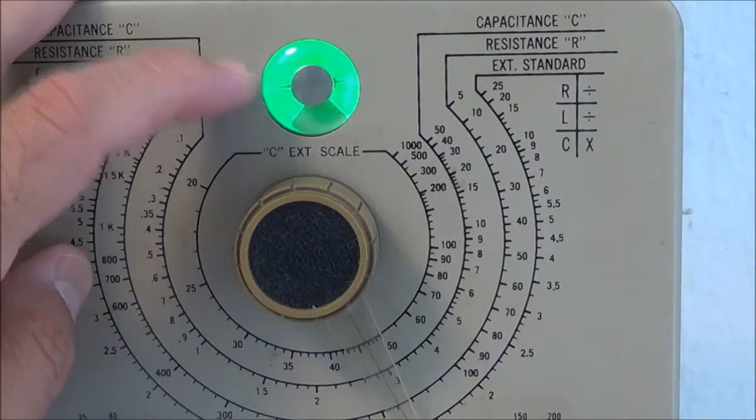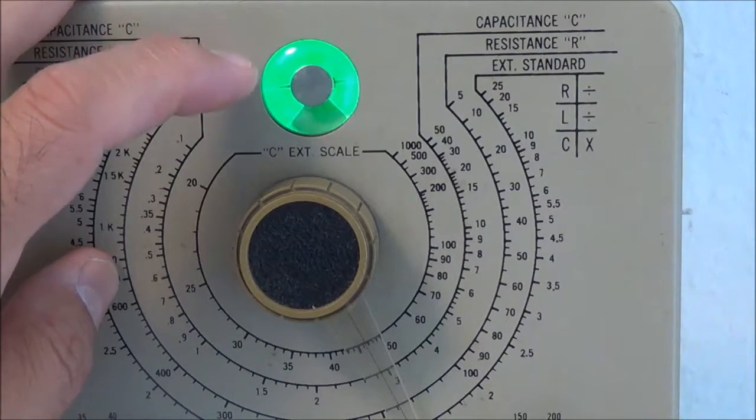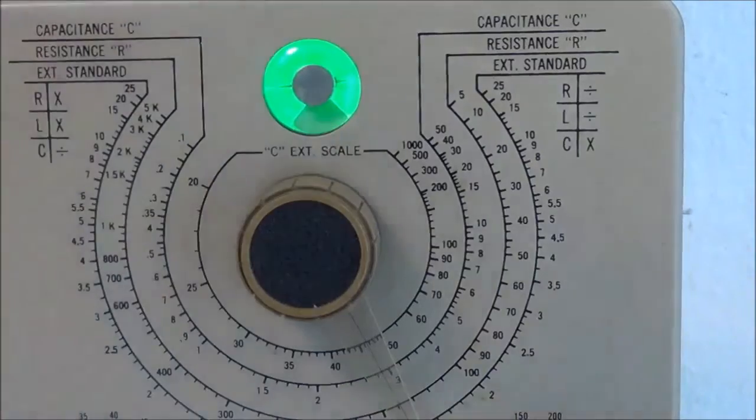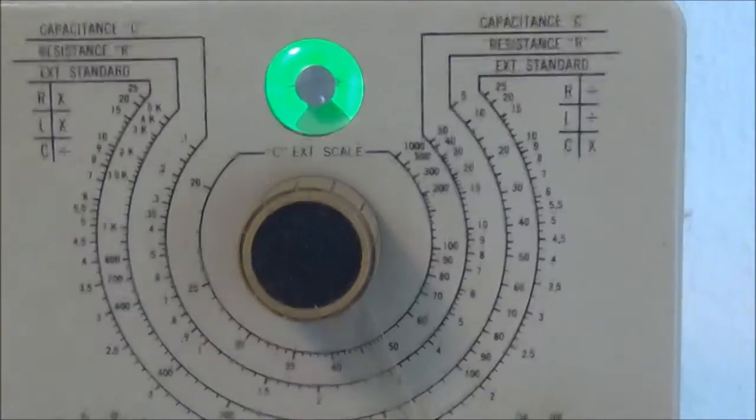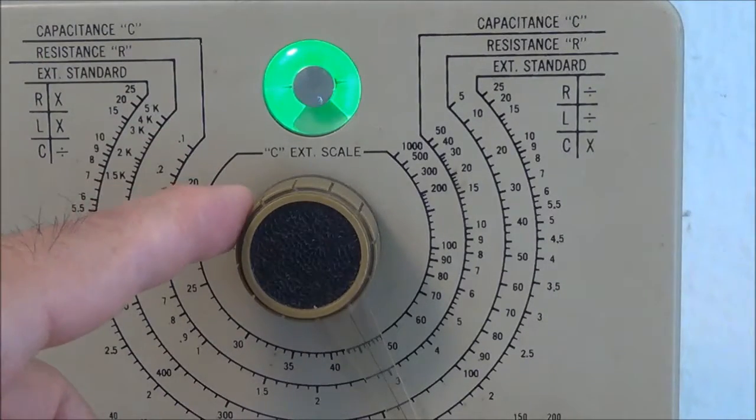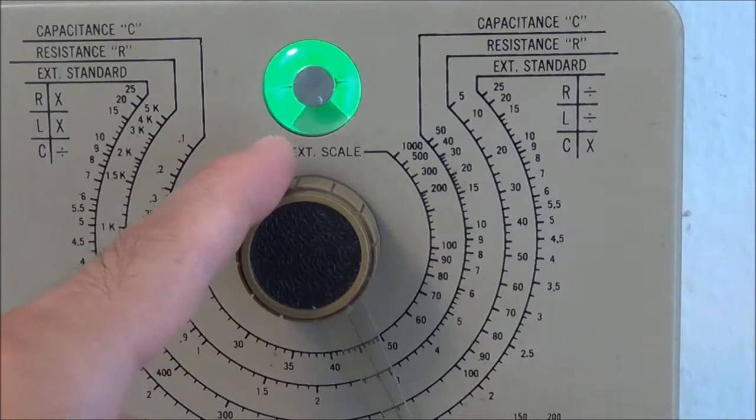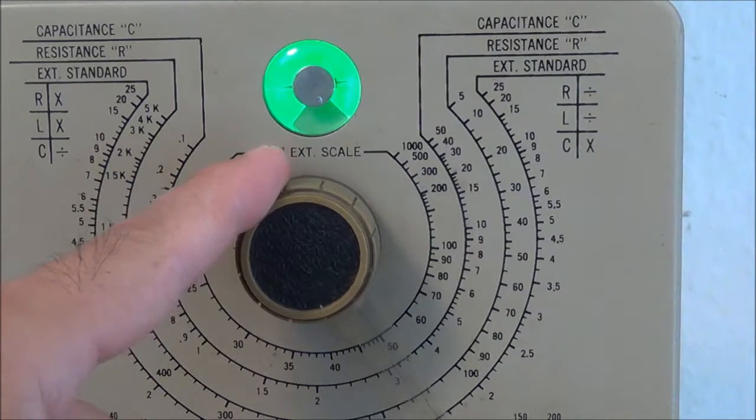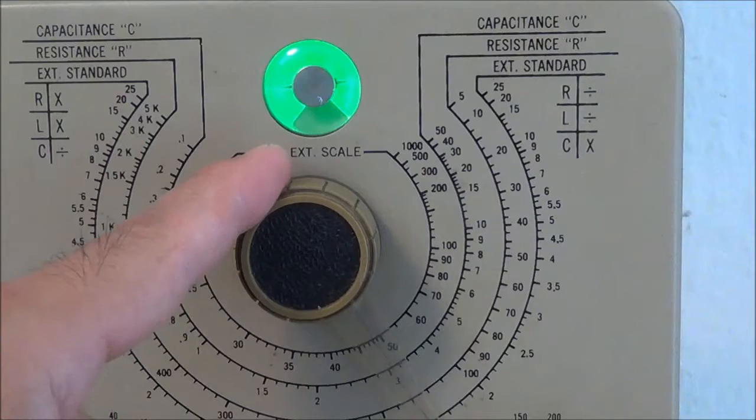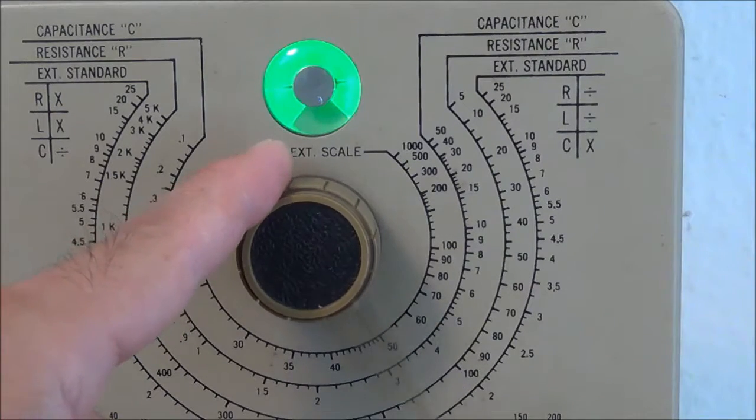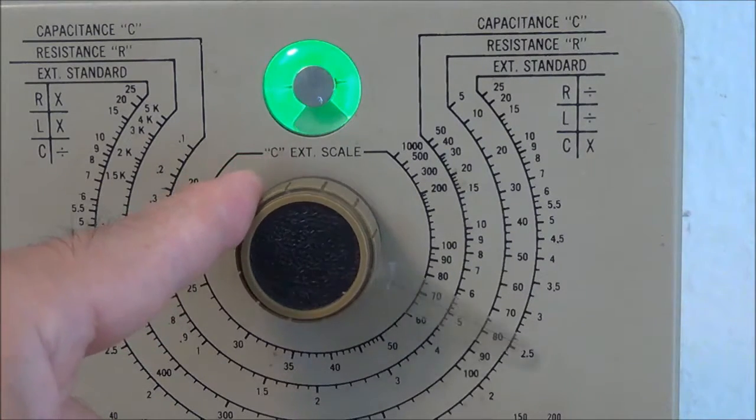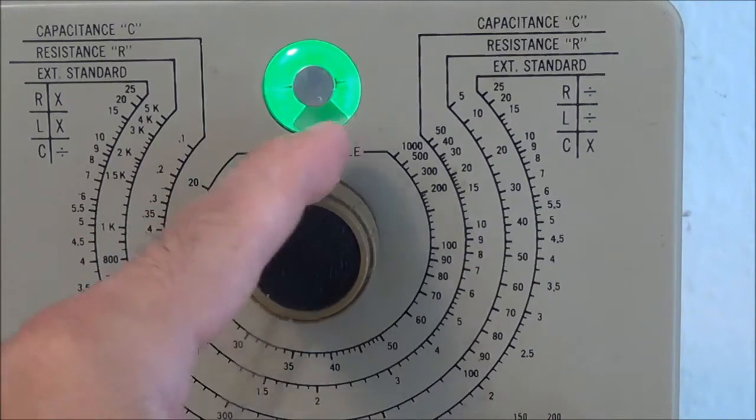I think what's supposed to happen here is this eye tube. I should have read the manual first, which I didn't. I think this is going to have to be closed, and then when I get to the 47 microfarad position here then it would have opened, and then when I move past it would have closed again.